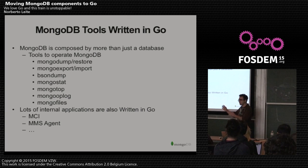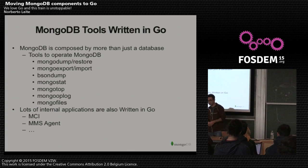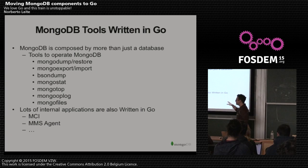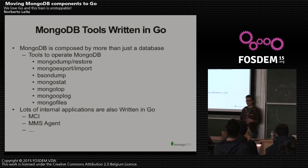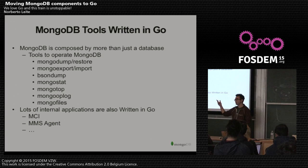We also have other applications completely built in Go. MCI is probably the first big project we have internally that completely uses Go — the whole thing is in Go except for the front end, which is Angular. I won't talk too much about it now. And then there's the MMS agent — anyone here know what MMS is? I'll talk about it a bit.